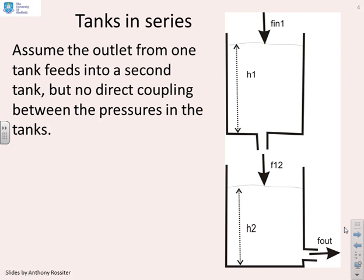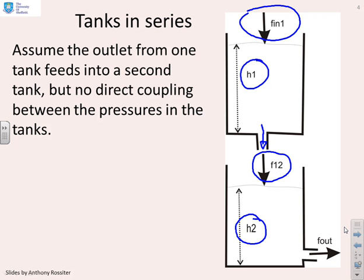What's going to happen if we put some tanks in series? You'll see we've got a tank at the top which has an input flow, it's got a depth h1, and it's got a restriction or an opening at the bottom so flow can escape, and we're going to call that flow f12. The escaping flow goes into a second tank, which has a depth h2, and that also has a restriction where the flow can come out, and the flow coming out I've written here as f out. We want to ask ourselves, how would we go about modeling a scenario such as this?